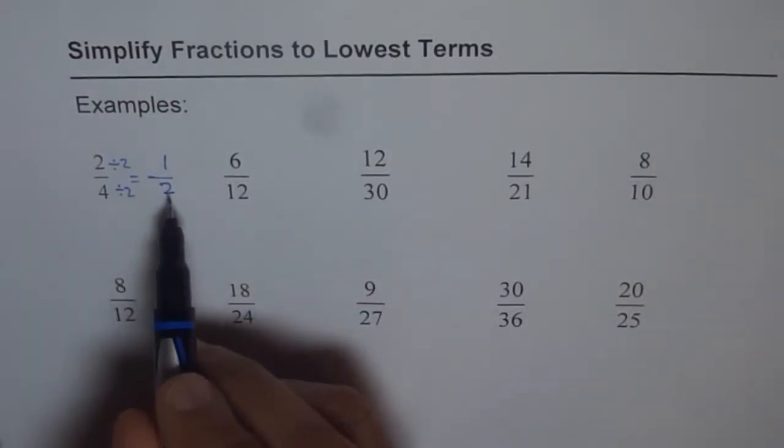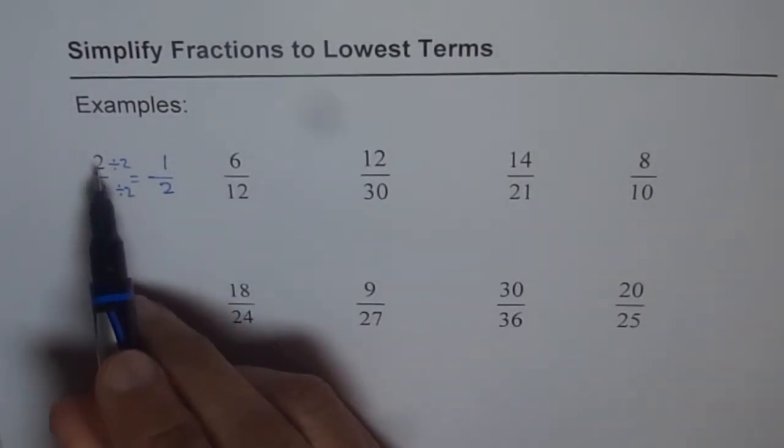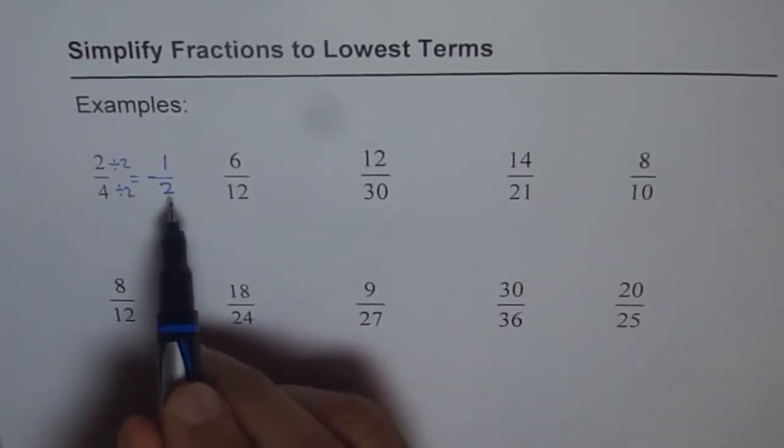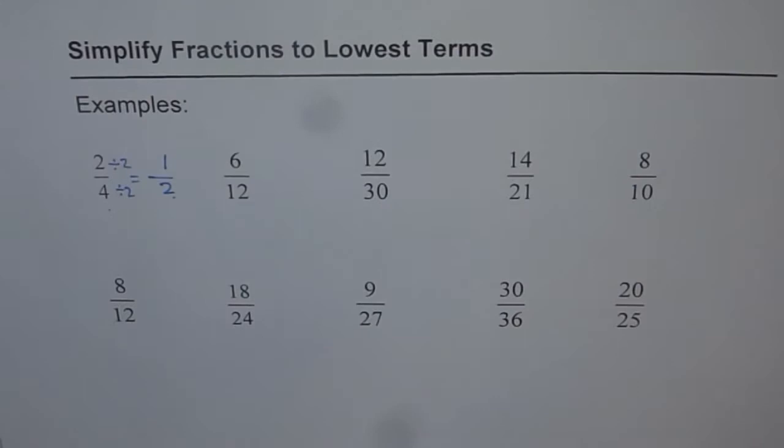That is how you simplify your fractions. 2 over 4 is with bigger numbers than 1 over 2 but it remains and it means the same thing. They are equivalent fractions. So in this process of simplifying fractions, we are trying to find equivalent fractions which are with lower numbers. This is the whole idea.